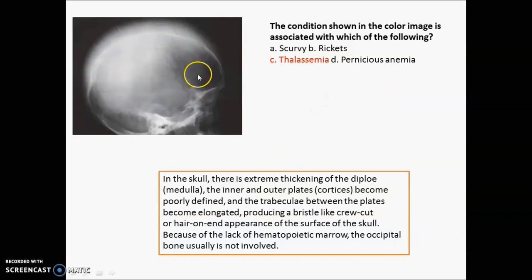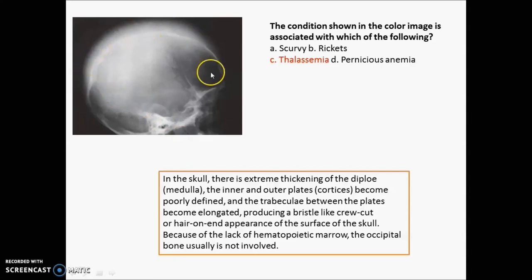What does this lateral skull radiograph indicate? You can see a hair-on-end appearance, indicating thalassemia. In thalassemia, there is extreme thickening of the diploë. The inner and outer cortical plates become poorly defined, and the trabeculae become elongated, producing a bristle-like crew-cut or hair-on-end appearance. Because of lack of hematopoietic marrow, the occipital bone is usually not involved — so the hair-on-end appearance is seen only in the other areas.